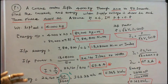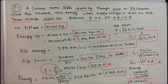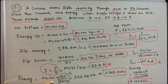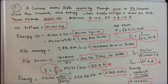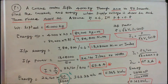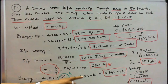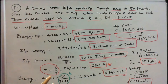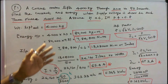Energy is equal to power into time in hours. Here 26,160 into 50 divided by 3600, that is equal to 363.33 watt-hours or 0.363 kWh. So the first part is over.